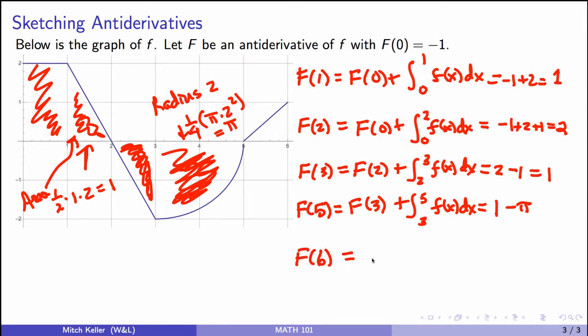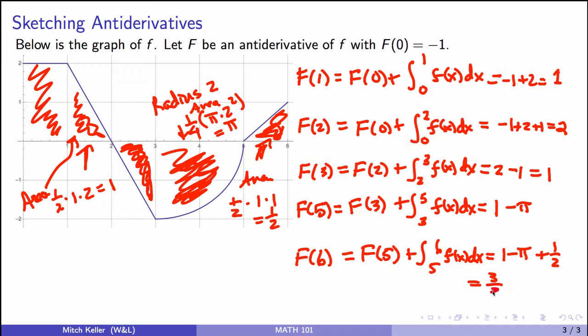f of 6, we can also do, and we'll do that as f of 5 plus the integral from 5 to 6, f of x dx. And now we're just concerned about, again, positive contribution to net signed area. Area is a half, times the base is 1, times the height is 1, so the area of that triangle is a half. And so we have 1 minus pi plus a half, which we might write as 3 halves minus pi.